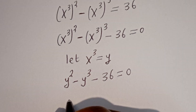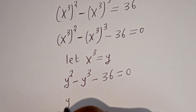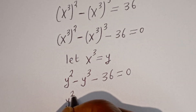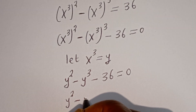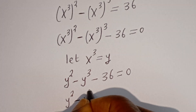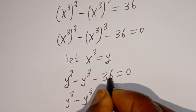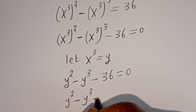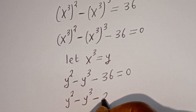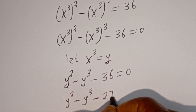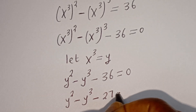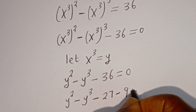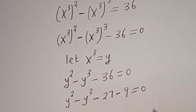This equation becomes y squared minus y to the power of 3 minus 36 equals 0. Then minus 36 can be written as minus 27 minus 9, equal to 0.